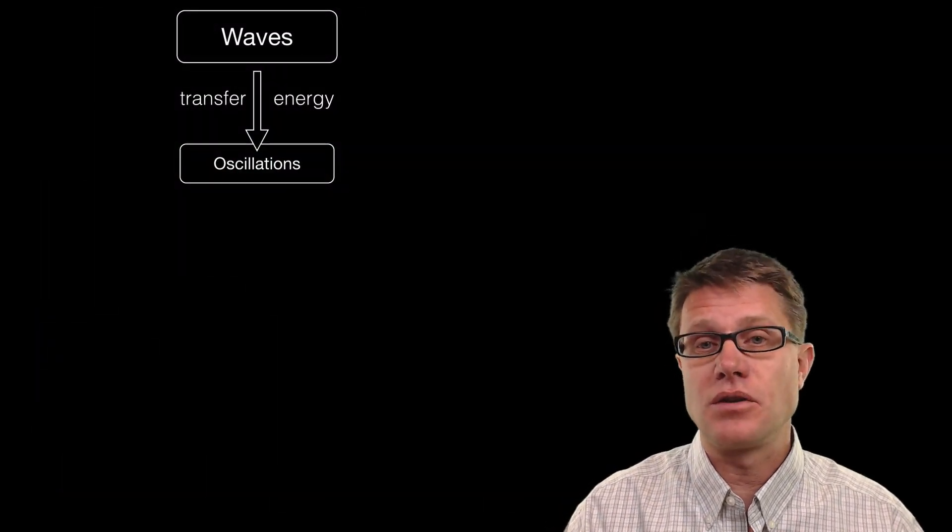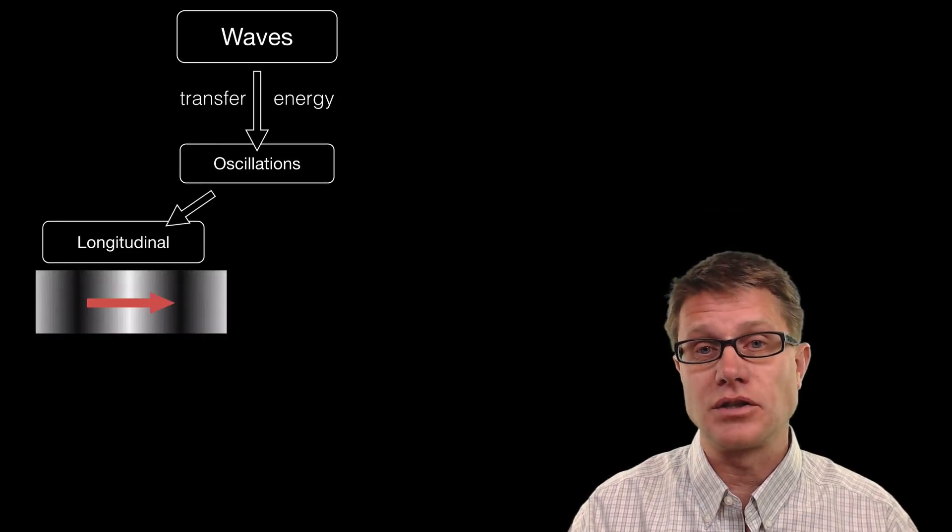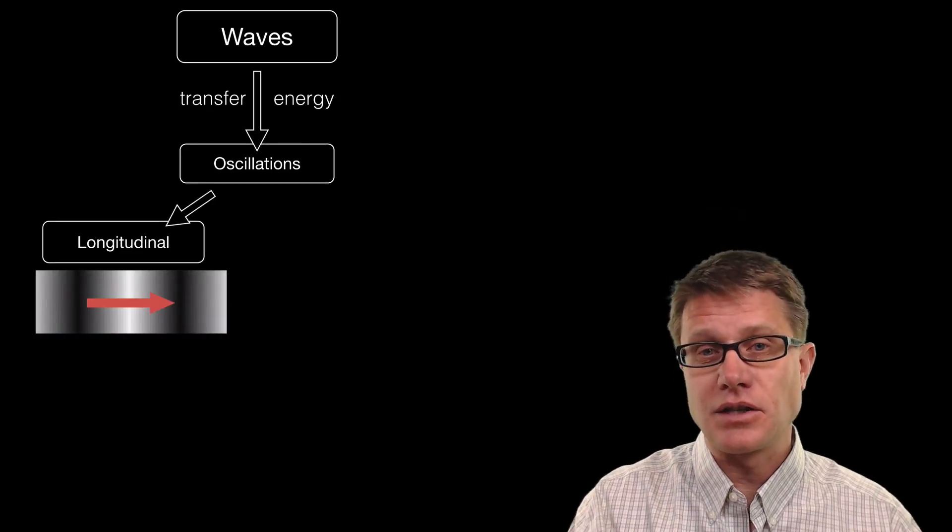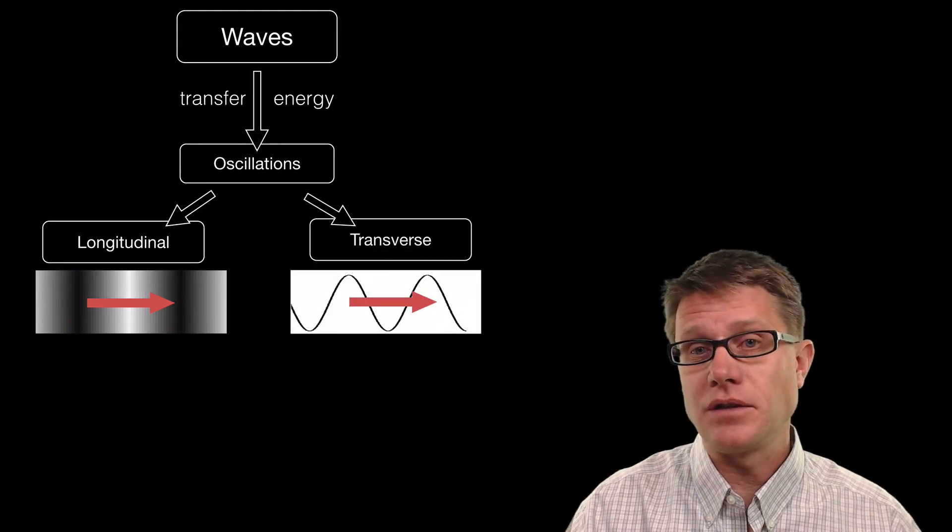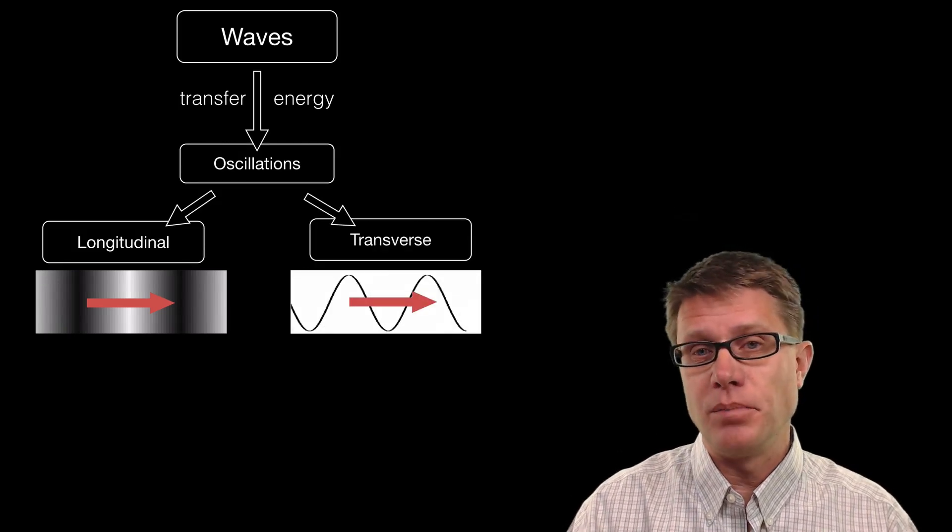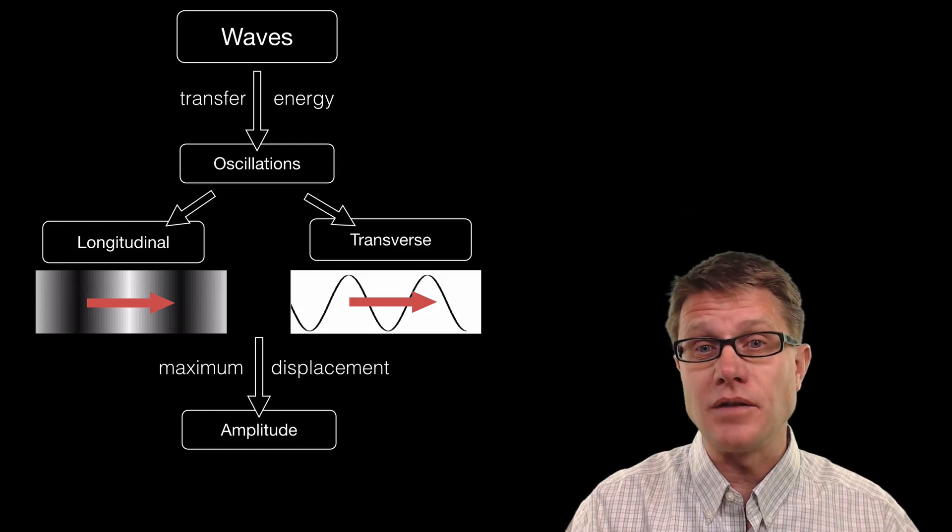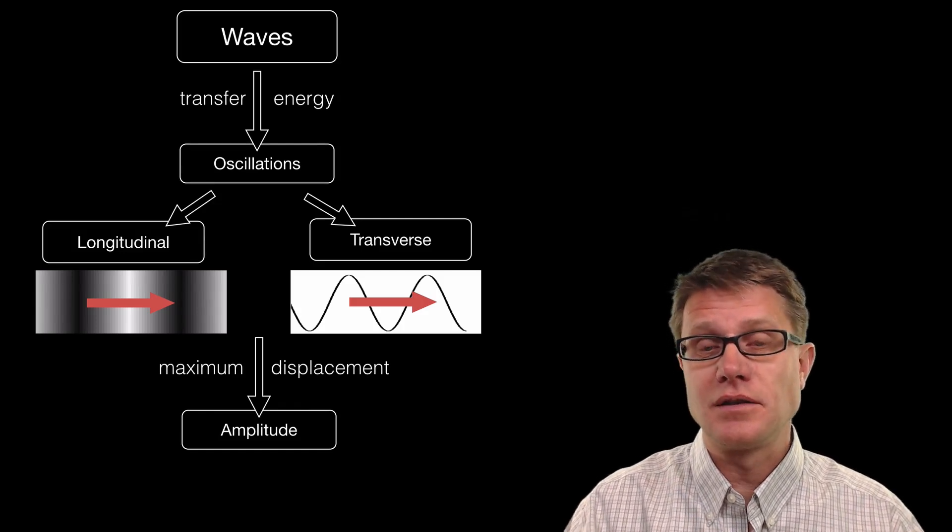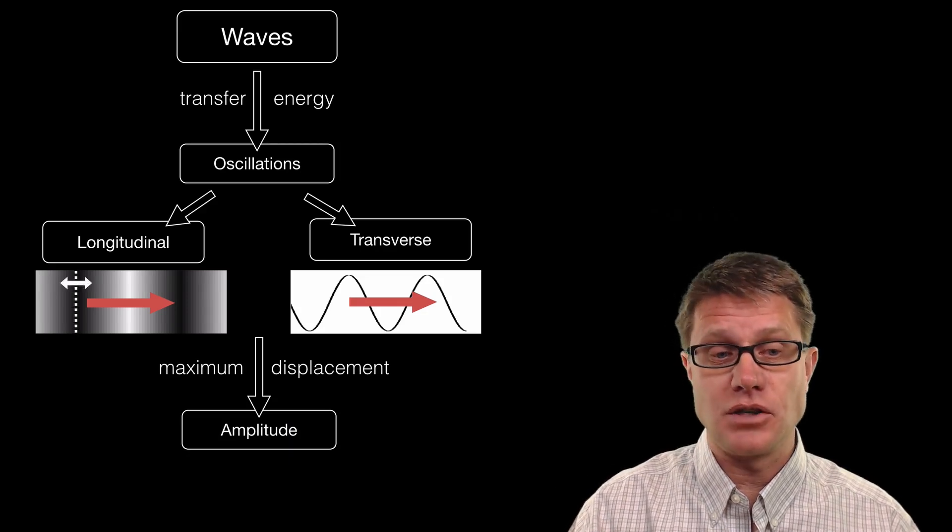And so waves transfer energy through oscillations. Those oscillations can be longitudinal in longitudinal waves. That is where the oscillations are parallel to the movement of the wave. Or they can be transverse where they are perpendicular. In both cases the maximum displacement, how big the wave is, is the amplitude. And since waves transfer energy the amplitude is a direct measure of the amount of energy.